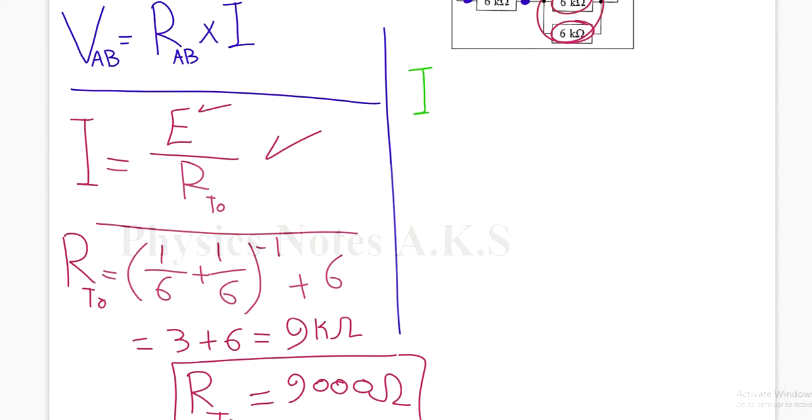Now I equals, again I will write the formula, E over R total. So it equals 12 over 9,000. So I got the current, 1 point